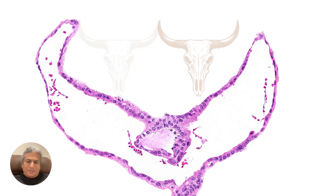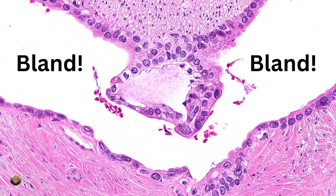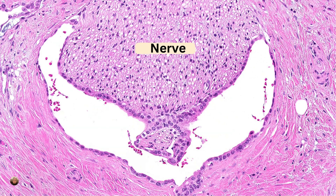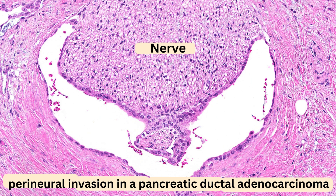Take a look at this on higher power. It looks extremely bland, doesn't it? There's no anisonucleosis, none of those irregular nuclear membranes that you often see with pancreatic ductal adenocarcinoma. But no — this is not benign. This is perineural invasion in a pancreatic ductal adenocarcinoma. By definition, perineural invasion is pancreatic ductal adenocarcinoma.